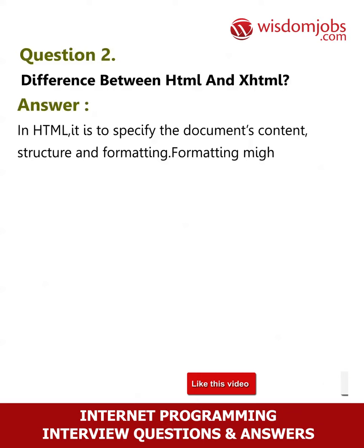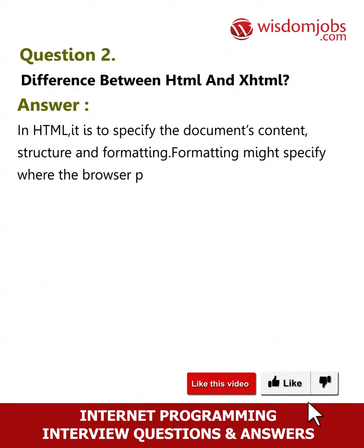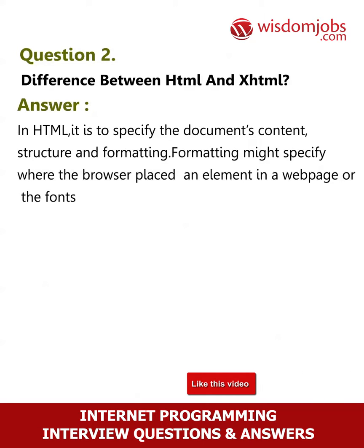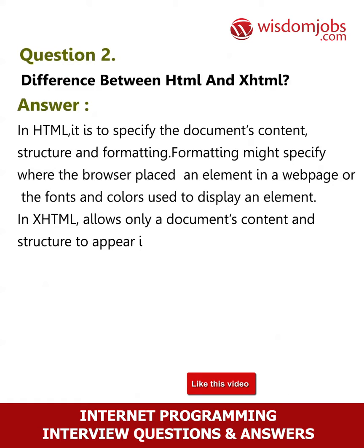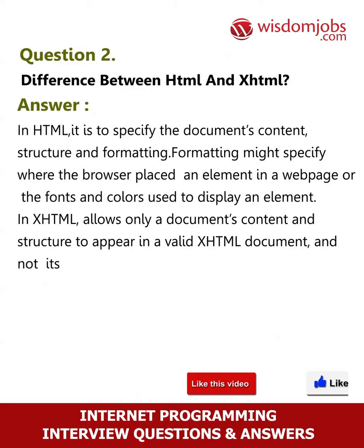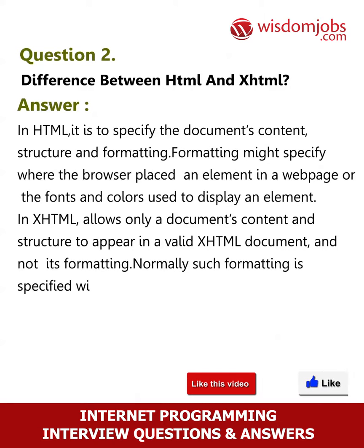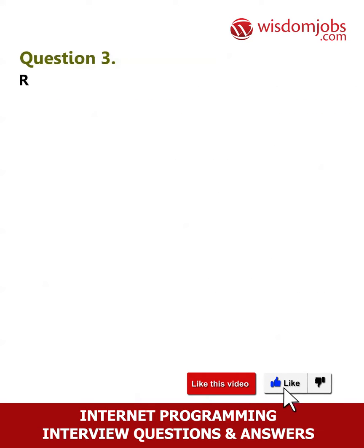Question 2: Difference between HTML and XHTML. Answer: In HTML, it is used to specify the document's content, structure, and formatting. Formatting might specify where the browser places an element in a web page, or the fonts and colors used to display an element. In XHTML, only a document's content and structure appear in a valid XHTML document, and not its formatting.